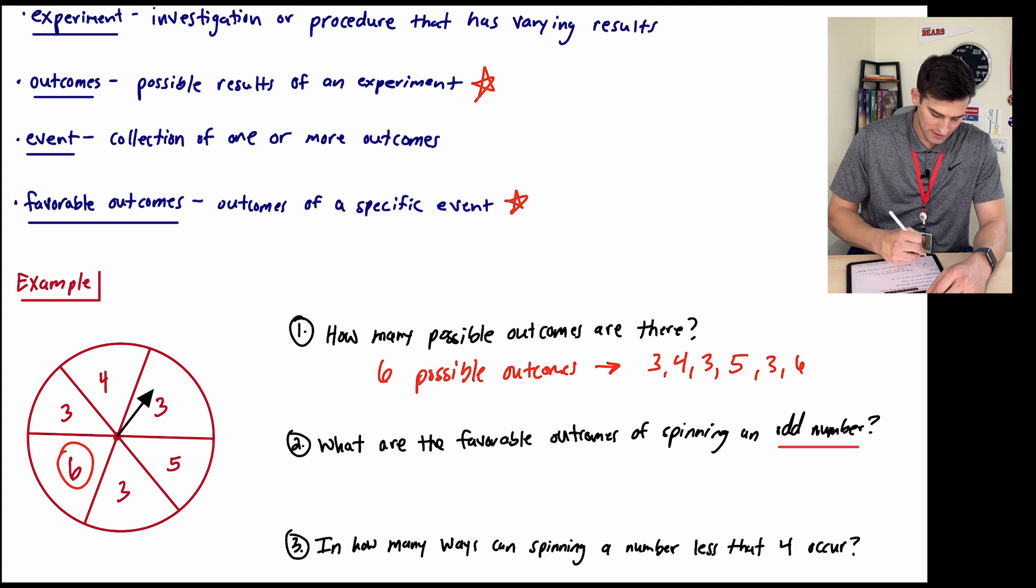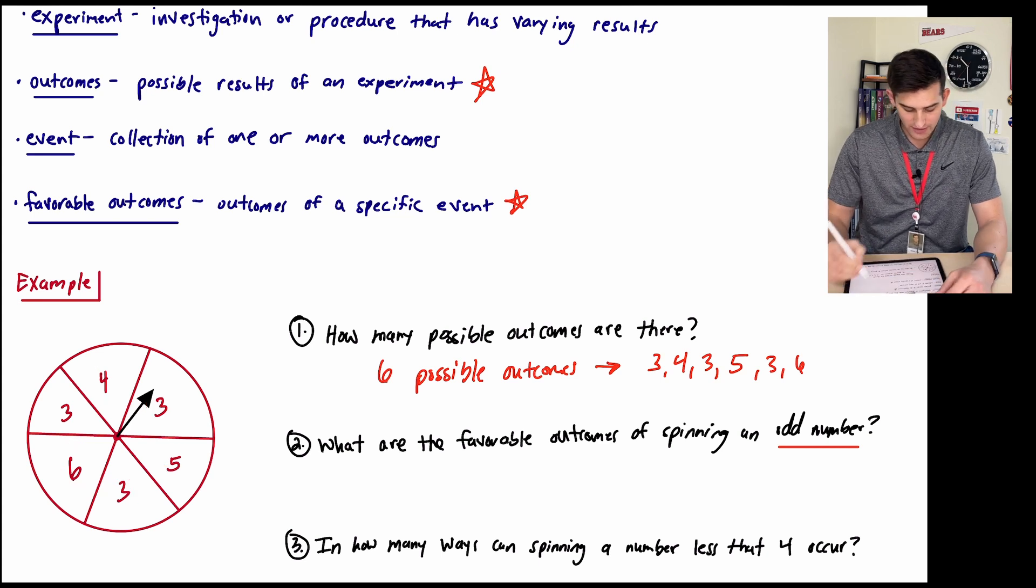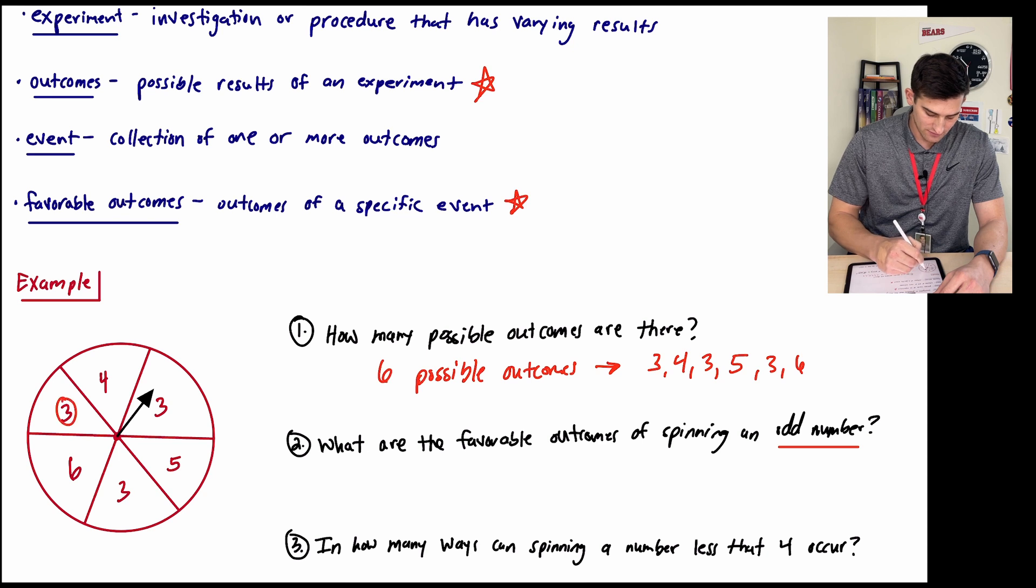Let's take our circles away and let's now circle the odd numbers. So 3 is odd, 3 is odd, 5 is odd, and 3 is odd.